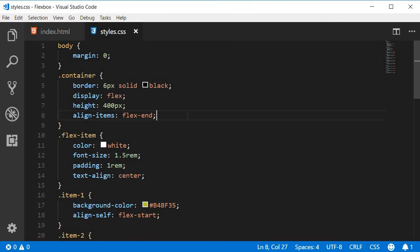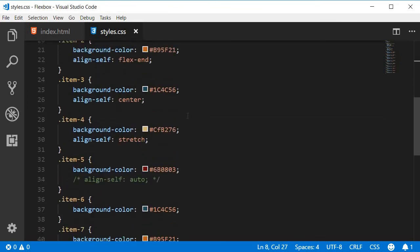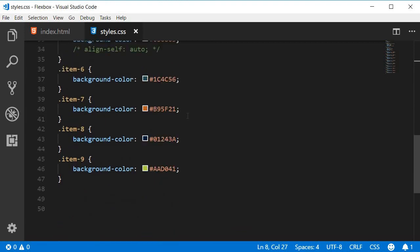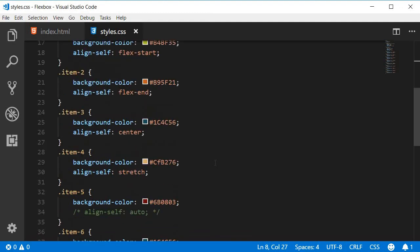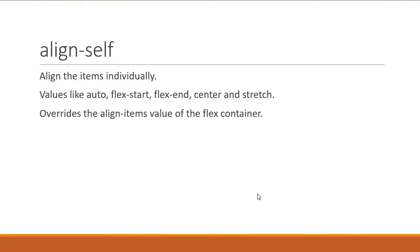The default value of align-self is not stretch — it is auto, which means inherit the value of align-items from the container. align-items on the container has a default value of stretch, but align-self on individual items has a default value of auto. If align-self is specified, it always overrides the align-items value. The align-self property accepts values like auto, flex-start, flex-end, center, and stretch.